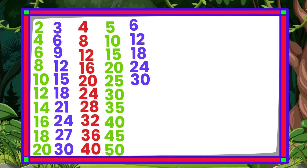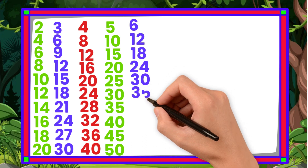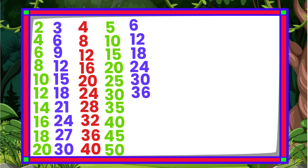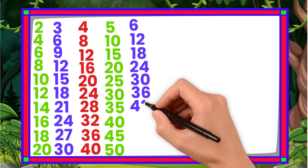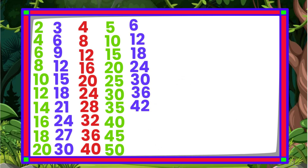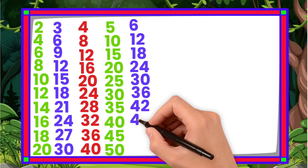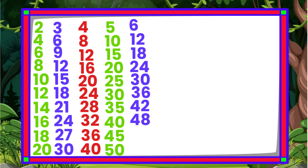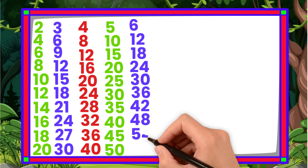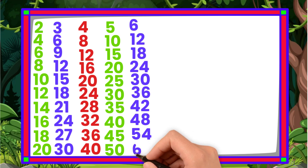6 6s are 36. 6 7s are 42. 6 8s are 48. 6 9s are 54. 6 10s are 60.